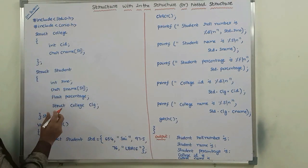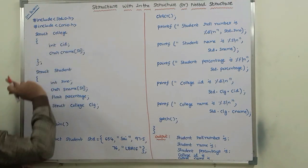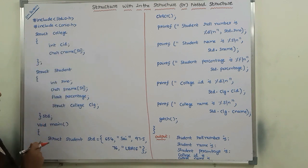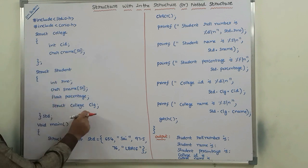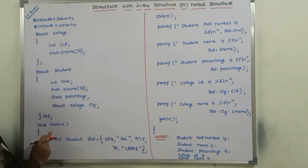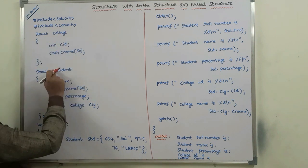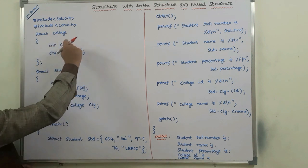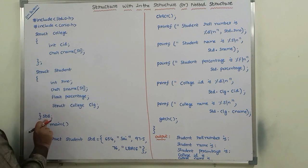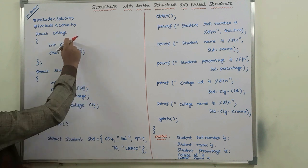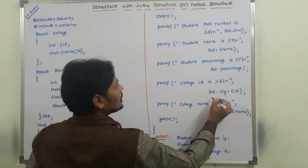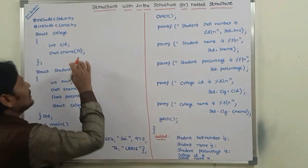Next, we have to access the college ID. To access the college ID, we use this structure variable dot this structure variable dot member name. The variable created for student structure is std, and the variable created for the college structure is CLG. So: std.clg.cid — by using this we are accessing the college ID.